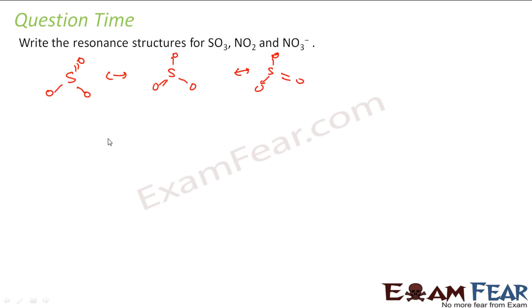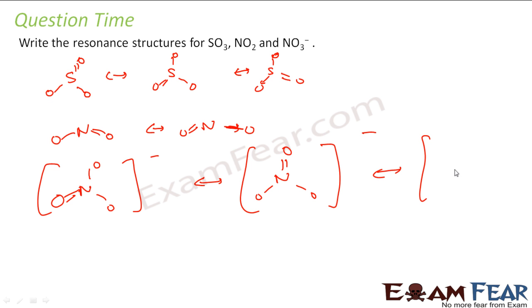For NO2 I can have double bond with this oxygen or I can have double bond with this oxygen. For NO3 minus I will have one double bond either with this oxygen or this oxygen or this oxygen.